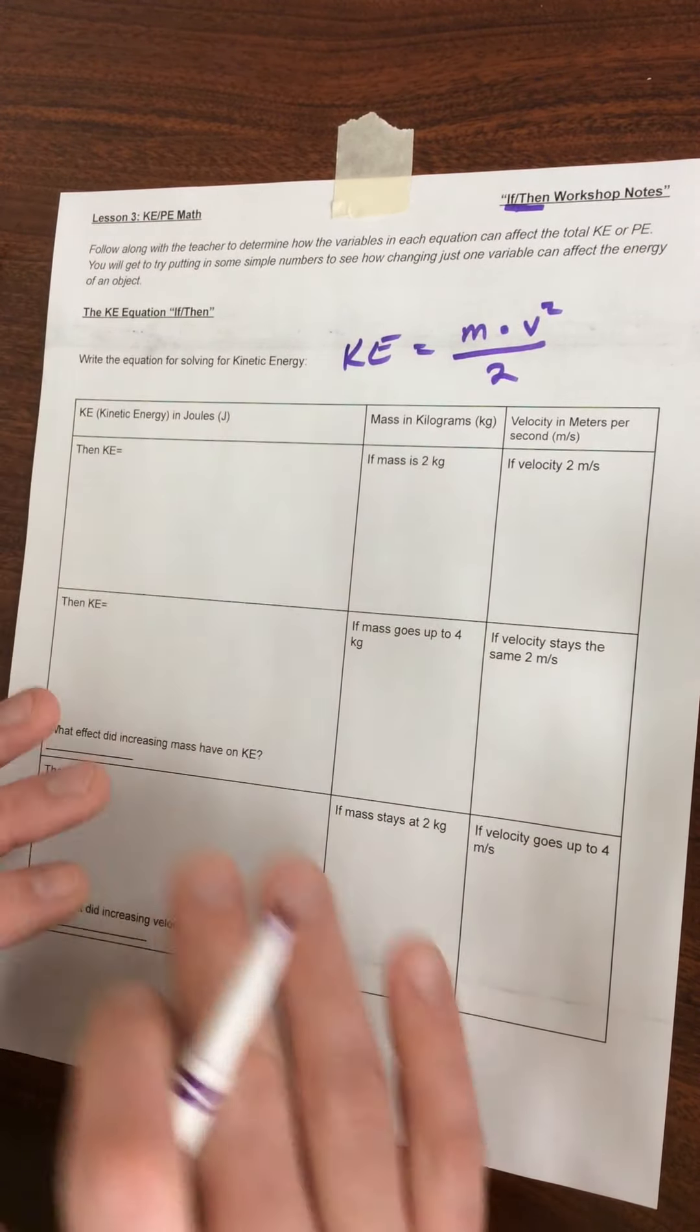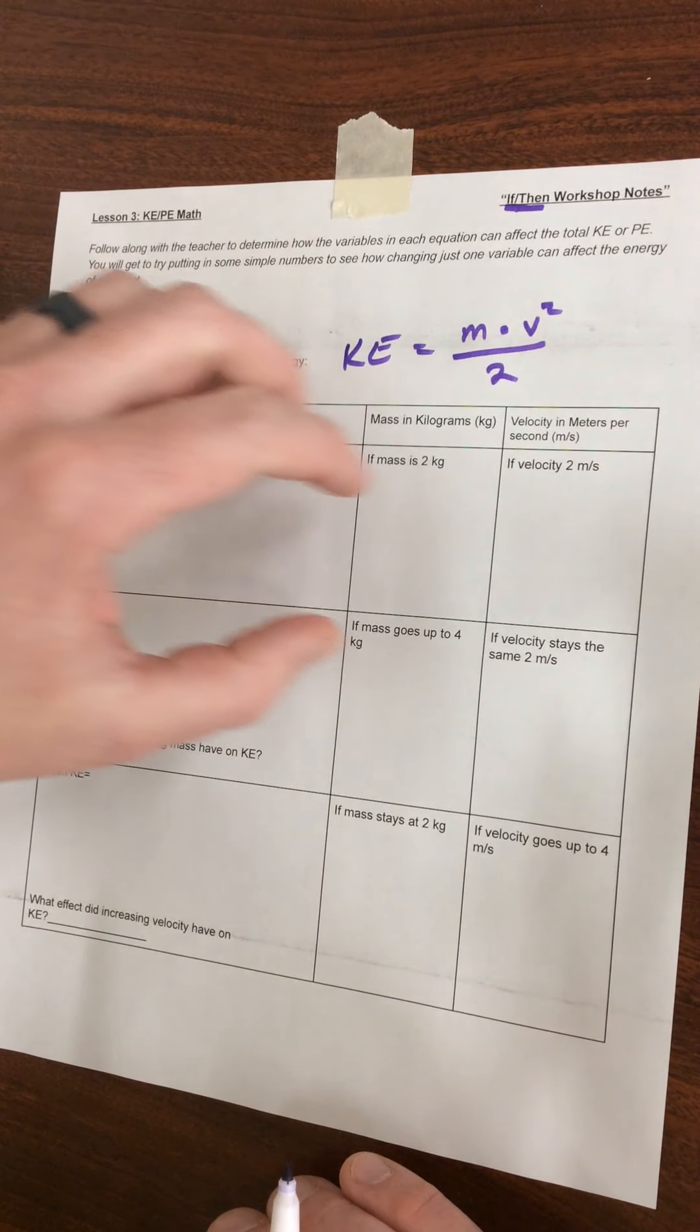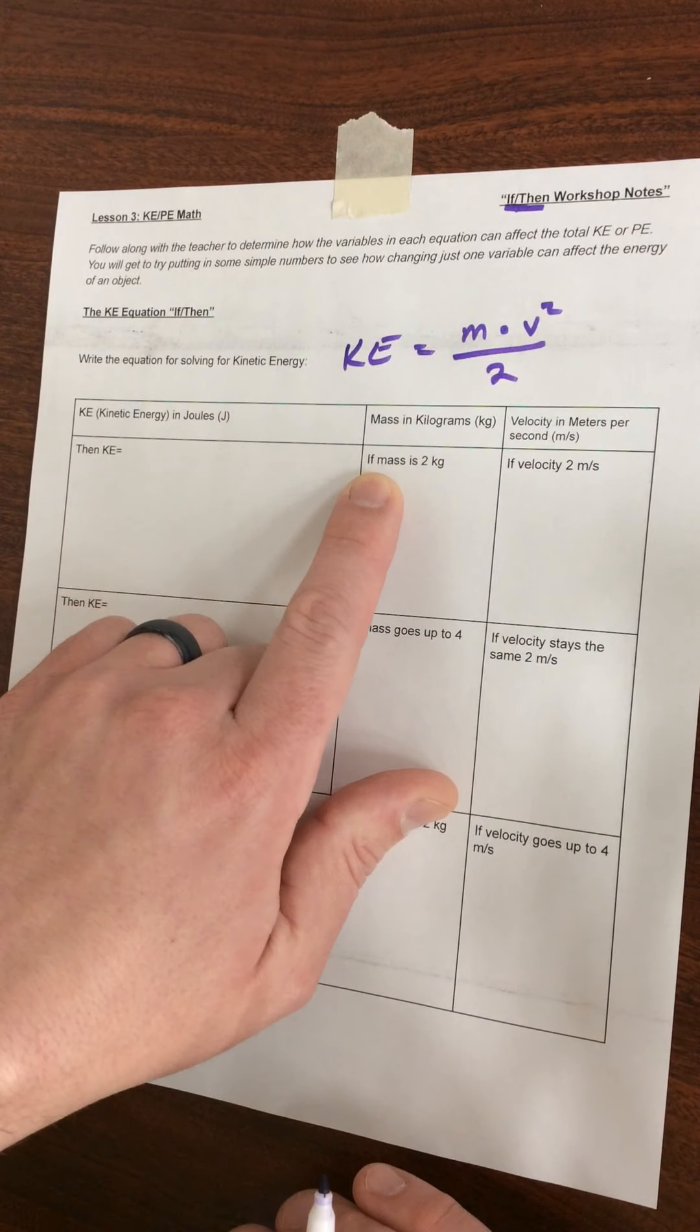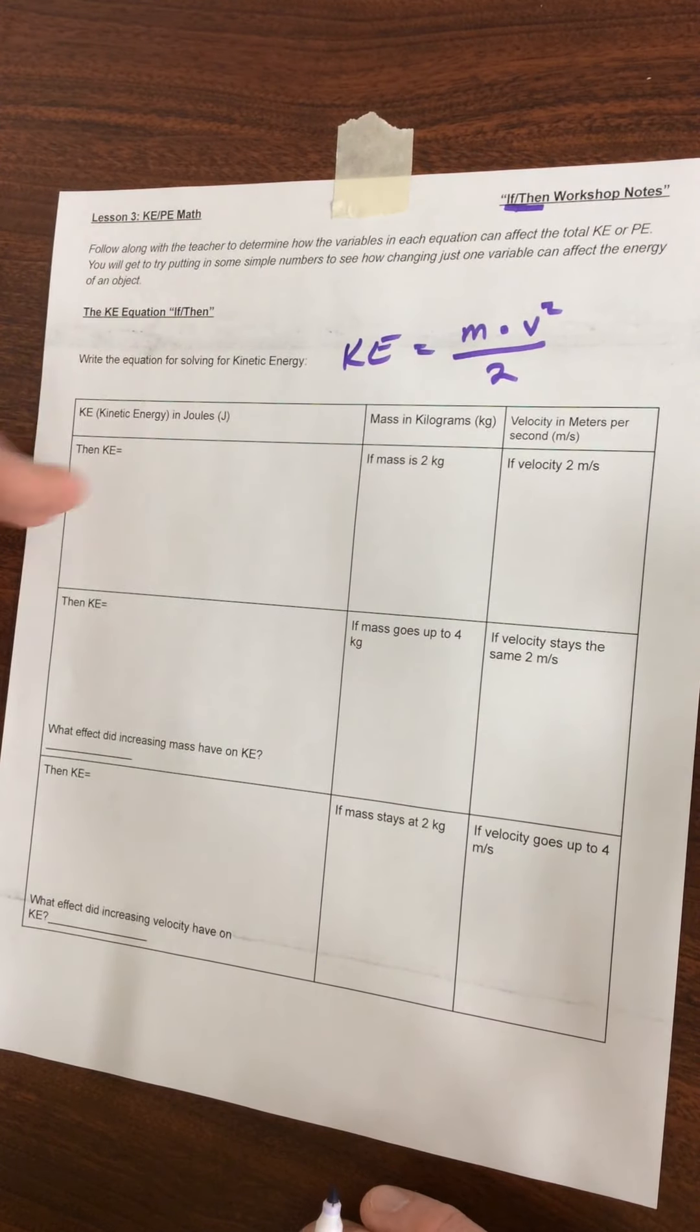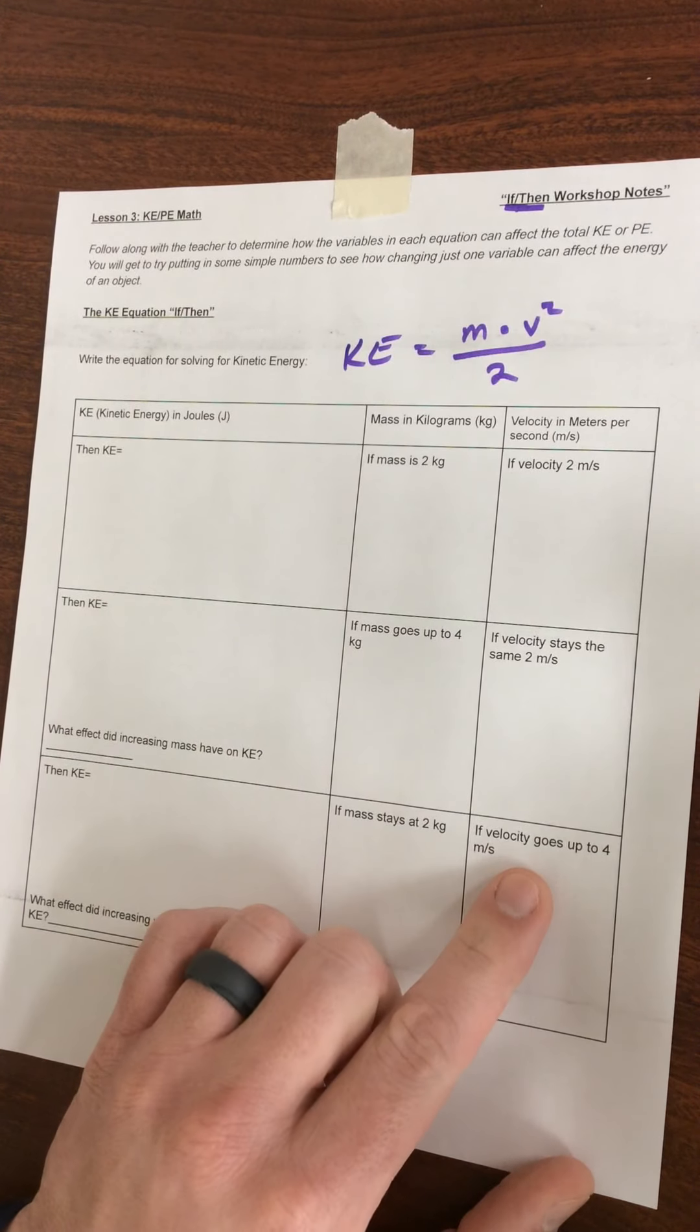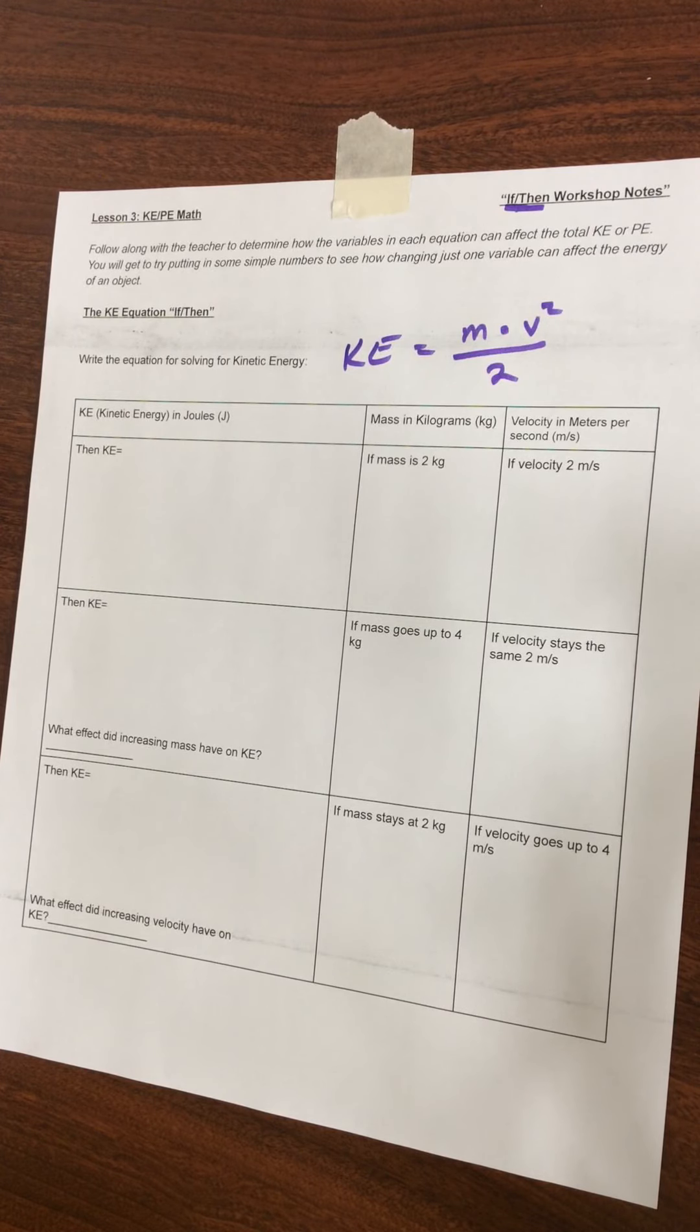So what we're going to do with this and the next two pages is we're going to do a series of three problems where we have a baseline, and then we're going to compare what happens when we change the mass and leave the velocity the same, or change the velocity and leave the mass the same. You'll be able to see what impact changing the variables has on the total amount of potential and kinetic energy.